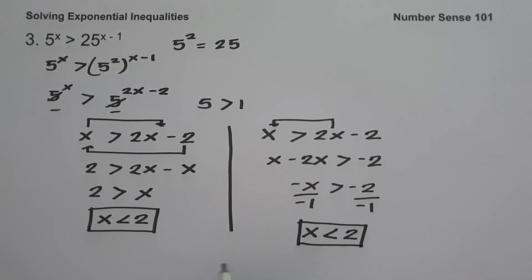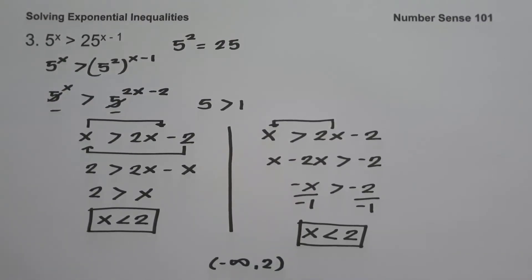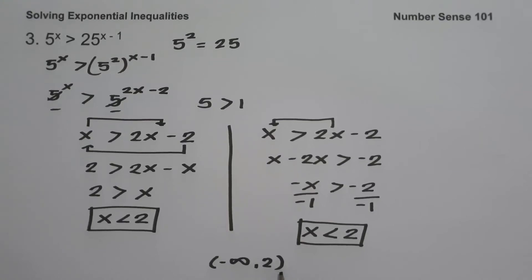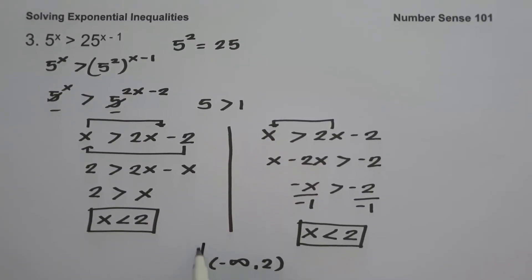Therefore, the solution set is from negative infinity up to 2, excluded. We use parentheses because our inequality symbol is less than, meaning 2 is not included in our solution. And this will be our answer.